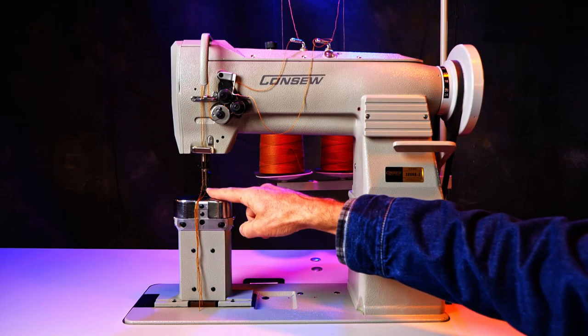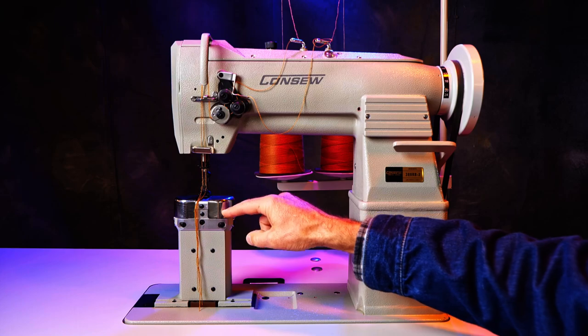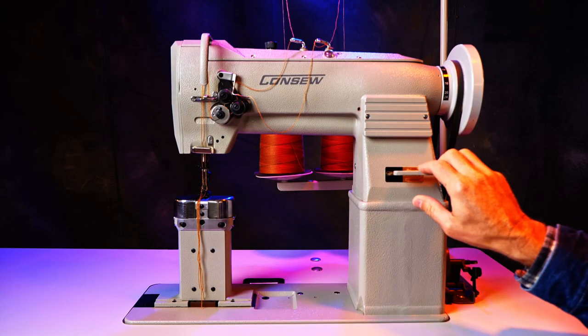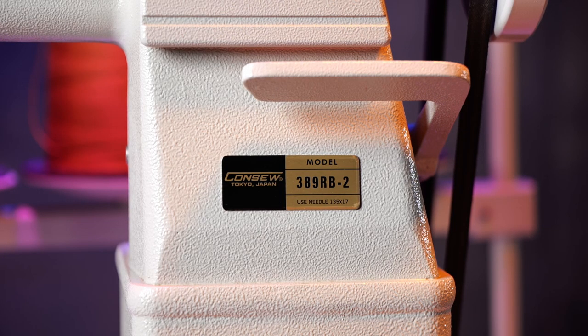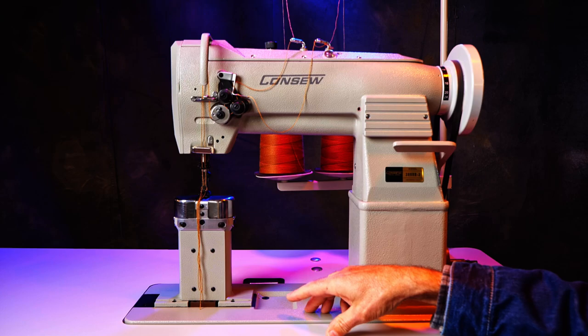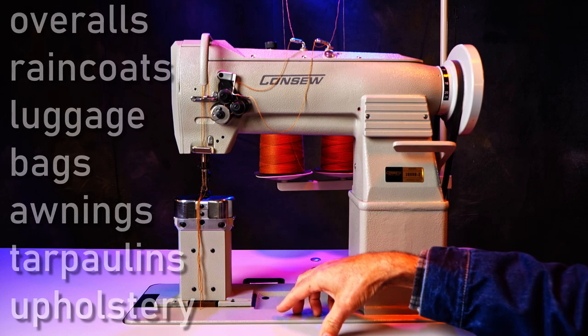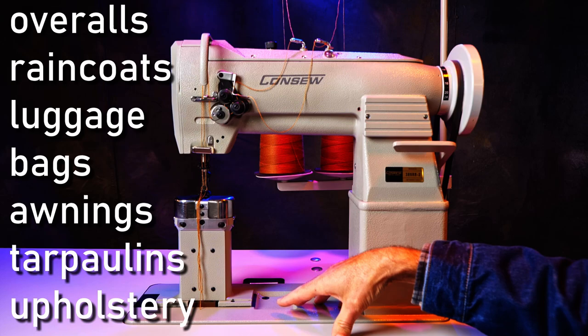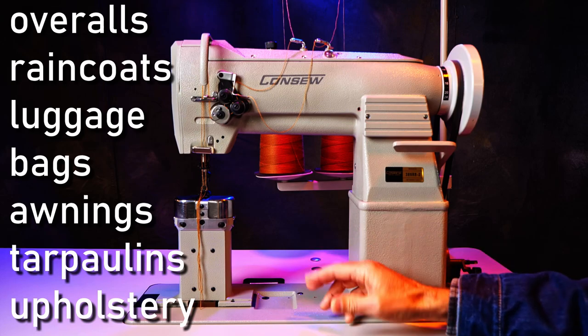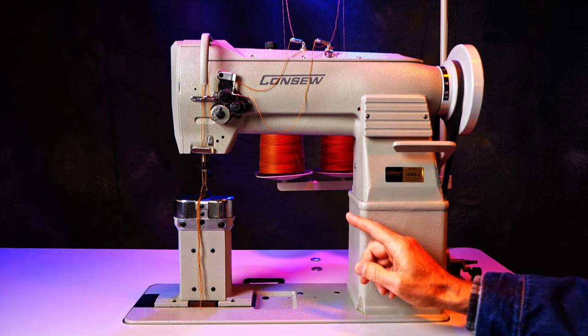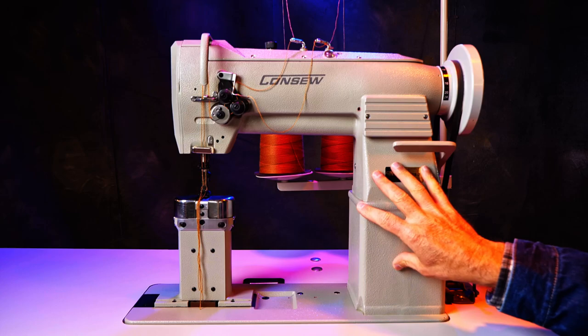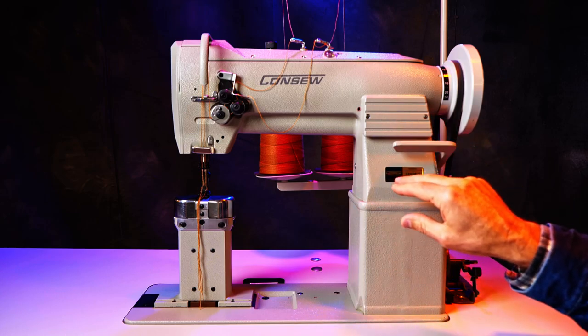This is a double needle triple feed machine, a post bed with reverse. This is the Konso 389 RV2, made in Japan. There are a lot of applications for this machine - it could be used for luggage, awnings, tents, tarps, workwear, bags, and upholstery. I featured this machine in a bag making video. I'm going to bring it in for a closer look on some of the features.